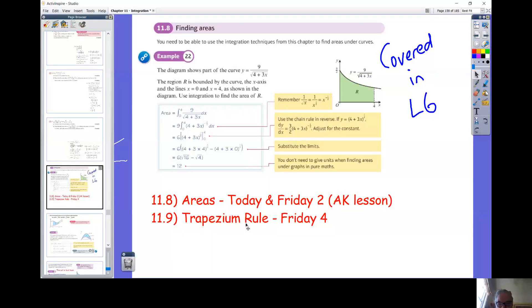So we're nearly there now. The plan is to get everything finished by half term. So what we've got left is 11.8 finding areas, so this is the areas underneath the curves.